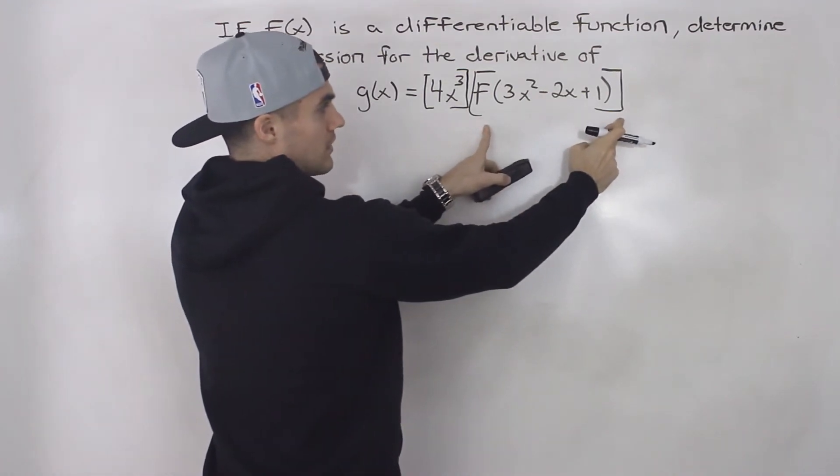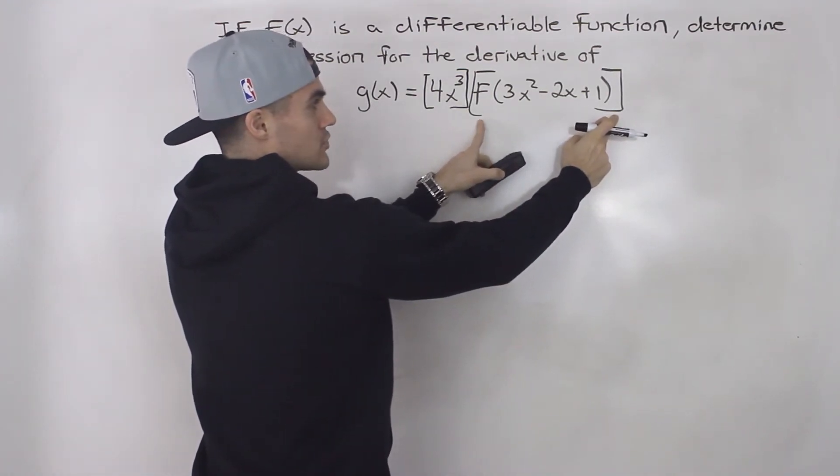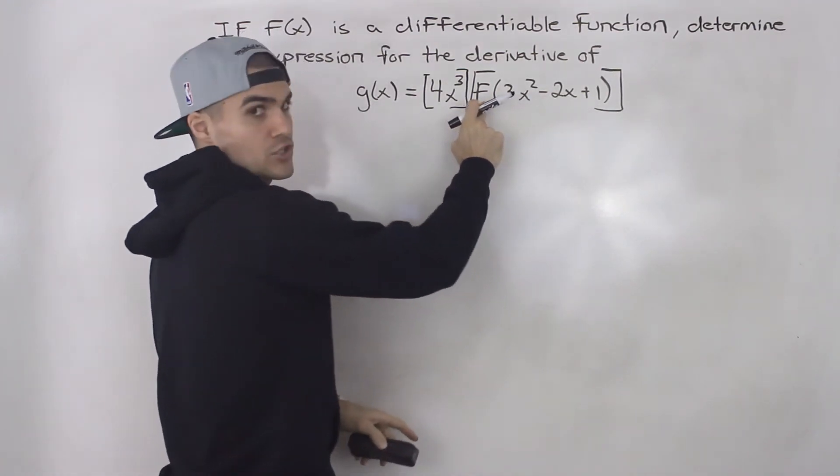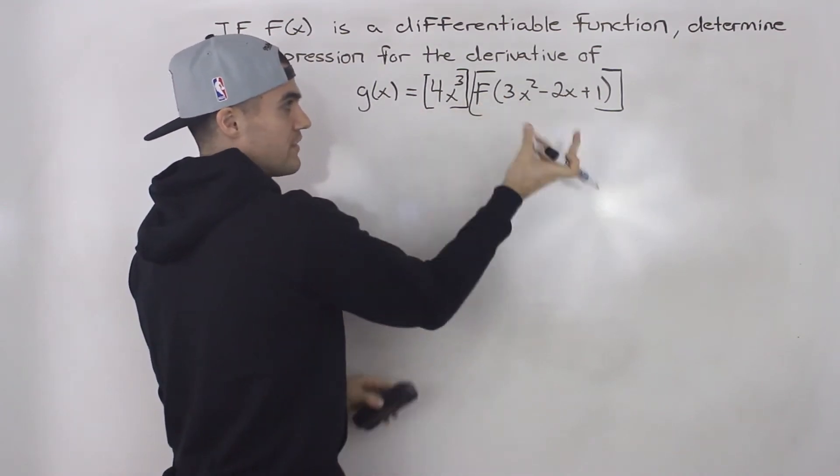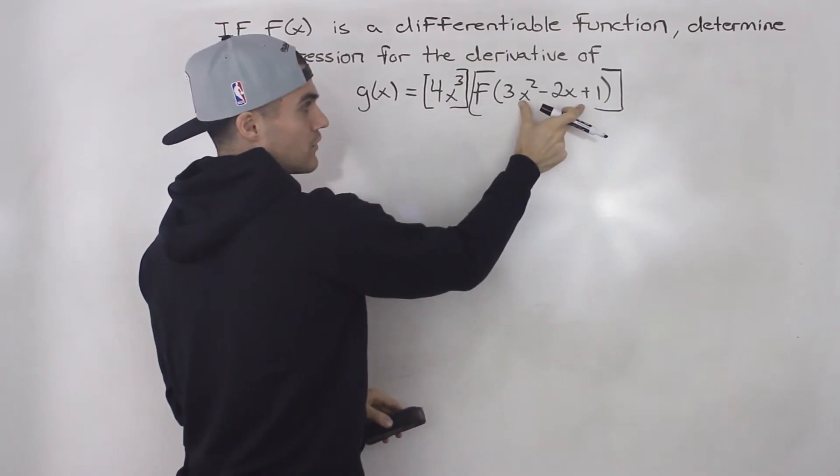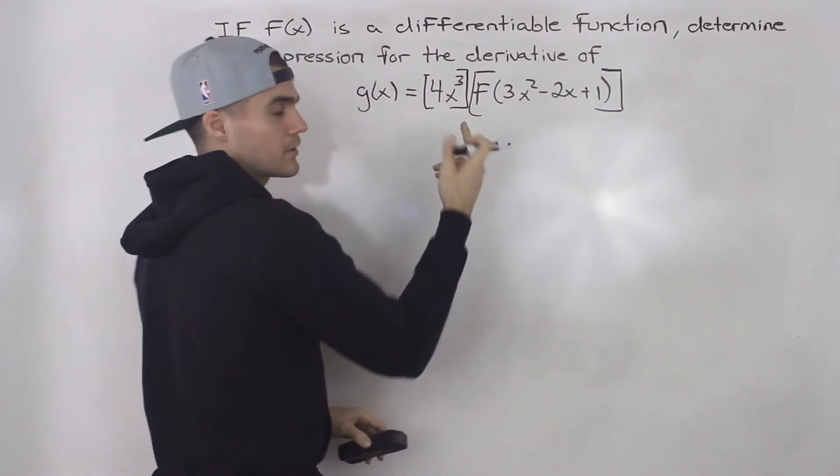Notice this function here is a composite function because we have some kind of function f that we don't know what it is, but we know that within that function f is another function 3x² minus 2x plus 1.